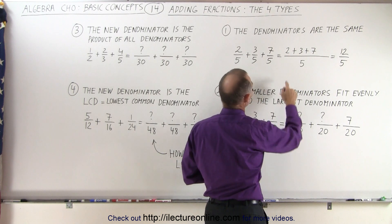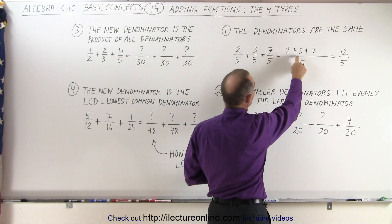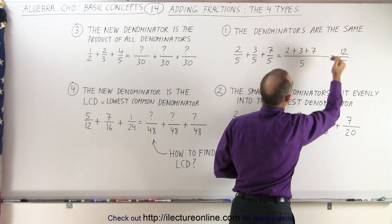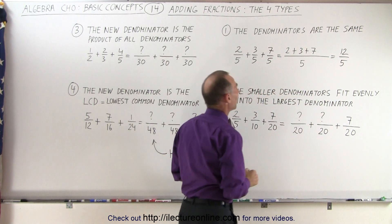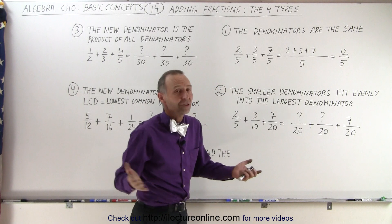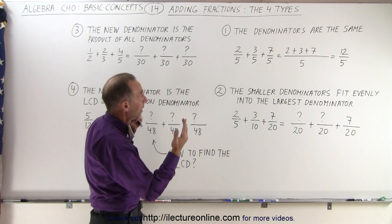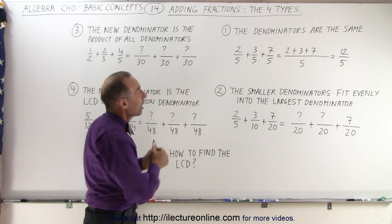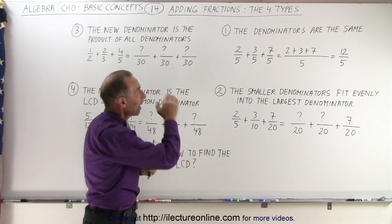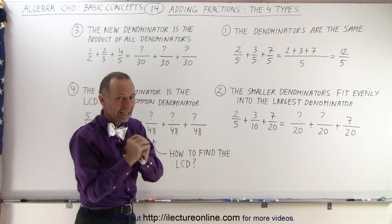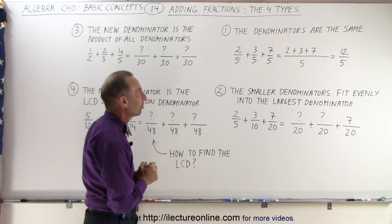You simply add the numerators together. So this becomes 2 plus 3 plus 7, which is 12, all divided by 5. Those are the easiest — when all the denominators are the same, you simply add the numerators and keep the denominator the same.